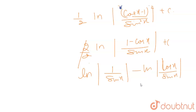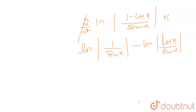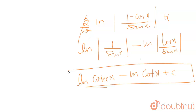तो यह आएगा: log with natural base of (1 upon sin x) minus log with natural base of (cos x upon sin x), plus C। और हम सभी जानते हैं 1 upon sin x होता है cosec x, और cos x upon sin x होता है cot x। तो final answer है log|cosec x minus cot x| plus C।